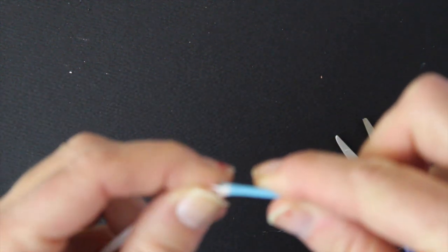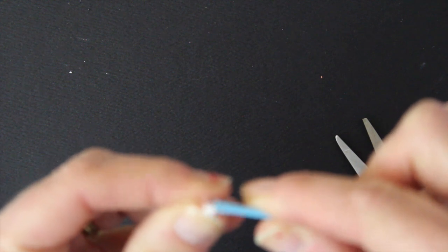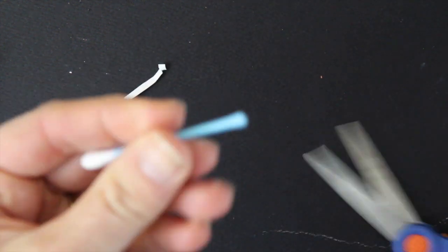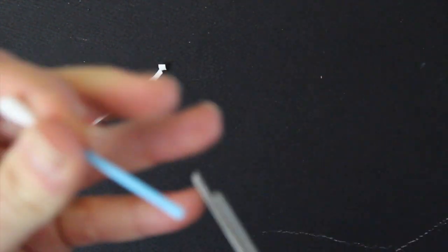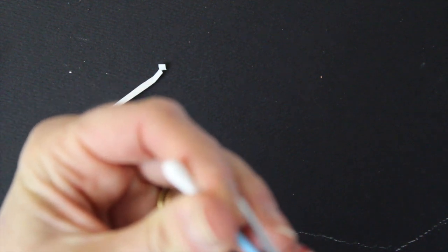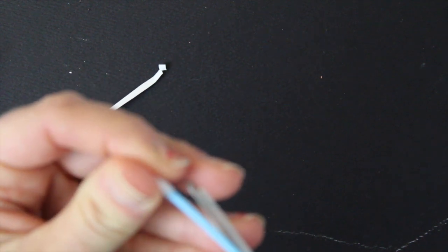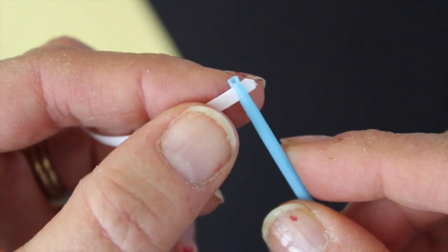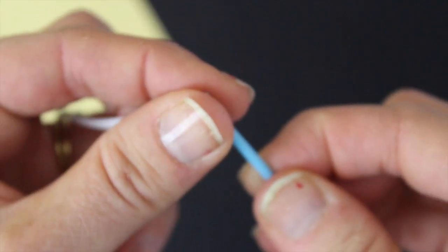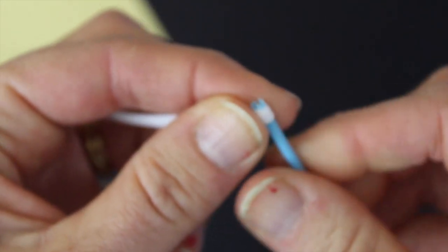You want to make sure that you've made the slit long enough that the paper actually fits in. That was not quite long enough, so now I'll give it a little twirl.